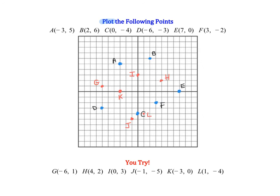Go ahead and check your work. Coordinate G should be over here in Quadrant II. Coordinate H should be over here in Quadrant I. Coordinate I should actually be on the y-axis at (0, 3). J should be down in Quadrant III at (-1, -5). K is on the x-axis, and L is down in Quadrant IV.